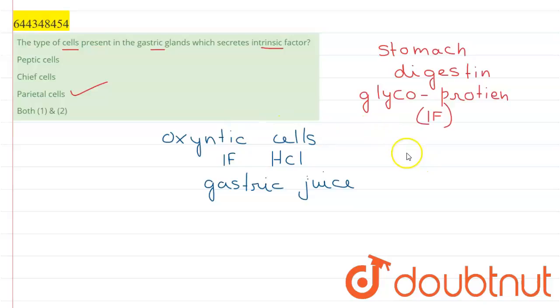If we see the other options here, the peptic cells are also present in the gastric glands. These peptic cells secrete pepsinogen, and pepsinogen converts to pepsin or releases pepsin.